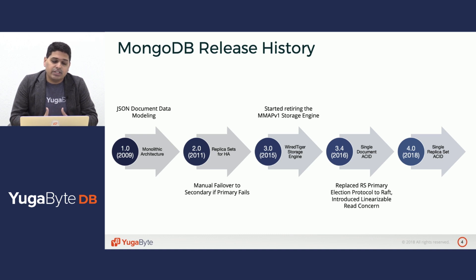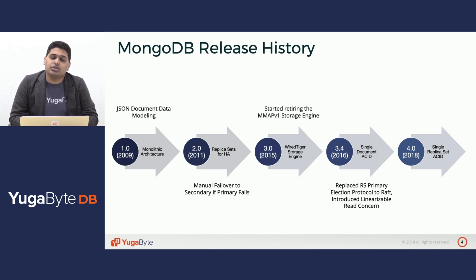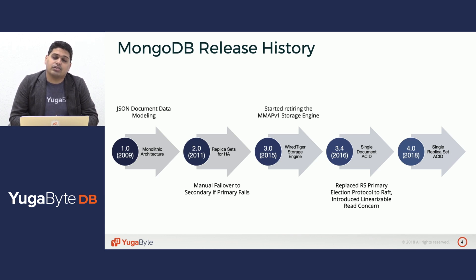It originally started in 2009 as an easy-to-use JSON document-based data modeling database. It had a monolithic architecture, which means that it was not possible to distribute data across multiple nodes.